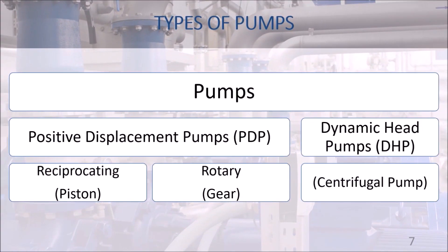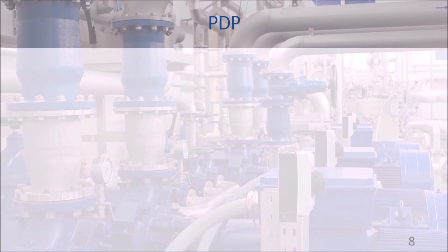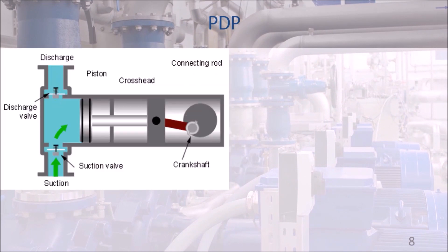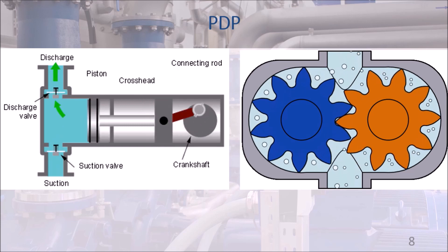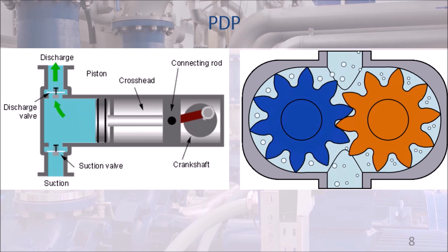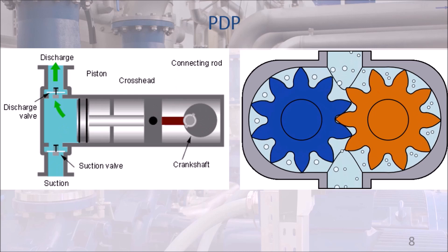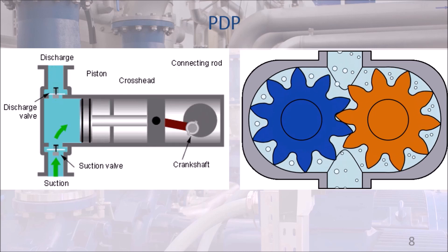This wide scope of applications is served by different types of pumps. Pumps are generally classified as positive displacement pumps or dynamic head pumps. The positive displacement pump family is subdivided into reciprocating pumps and rotary pumps. An example of a reciprocating positive displacement pump is the piston pump shown to the left, and an example of a rotary positive displacement pump is the gear pump shown to the right.